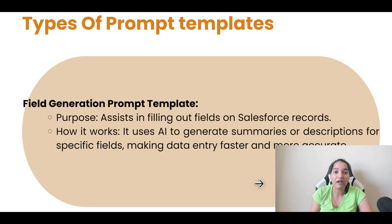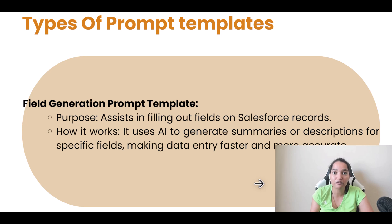The second type of prompt template is the field generation prompt template. If you want to fill out certain fields on a Salesforce record, you can use the field generation prompt template. It uses AI to generate summaries or descriptions for specific fields, making data entry faster and more accurate. So if you want to generate particular text for a particular field, this template will fill out the details in that field.